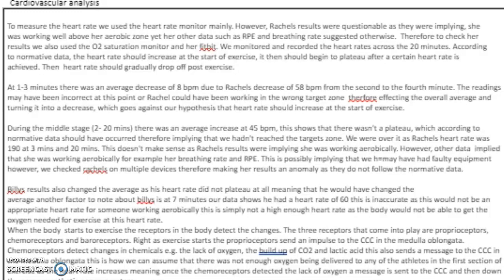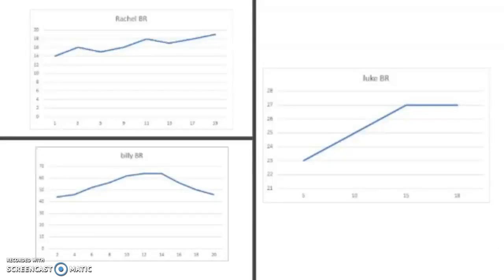Luke's data shows a slight decrease from 120 at minute 1 to 115 at minute 3, then an increase after minute 3 continuing until minute 13, where heart rate is just above 160. It fluctuates slightly until the 17th minute, then plateaus at 165 until the 20th minute. We expected Luke's heart rate to plateau; instead it continued to increase and only started to plateau at the 17th minute. According to normative data, we would expect to see an increase when exercise starts, followed by a plateau, and then a decrease in the recovery period.